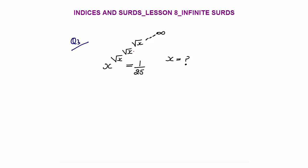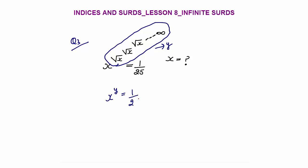Now we solve question number 3: x^(√x^(√x^(√x...))) up to infinity equals 1/25. You can pause the video and try it yourself. The repeating part here is not x but √x^(√x^(√x...)) up to infinity. I will assume this repeating part as y. So the question becomes: x^y = 1/25.